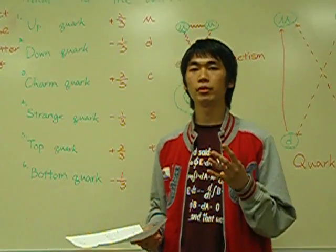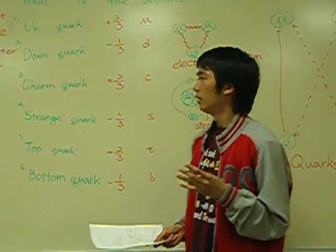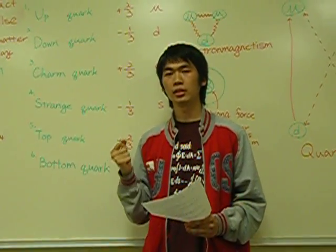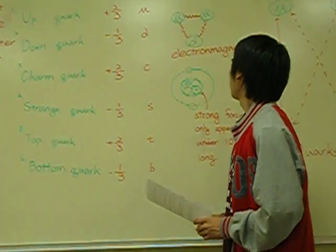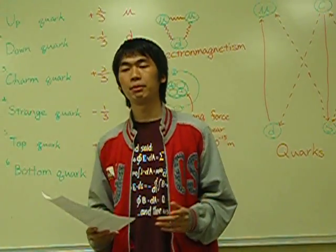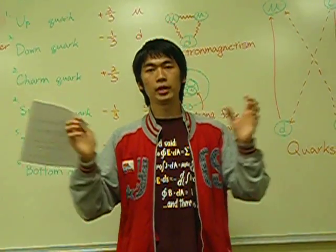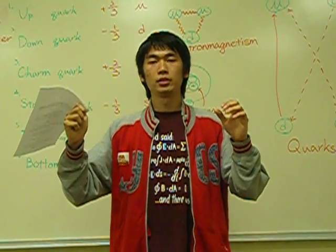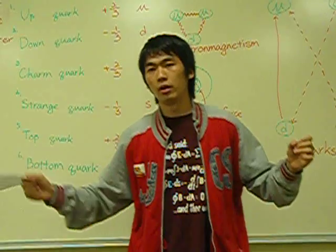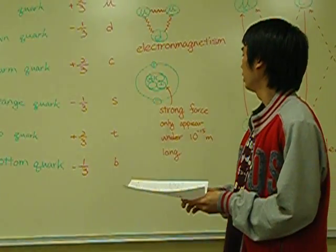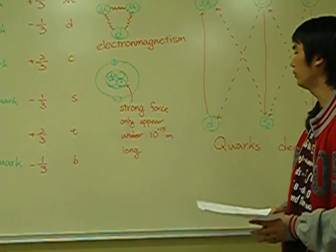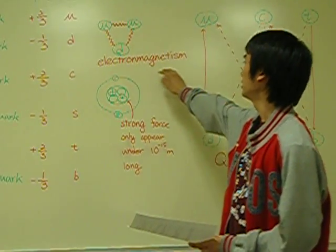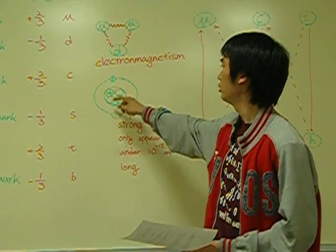Basically, there are four main forces in our lives, and the last one is called the strong force. The strong force is the strongest of them all. Have you ever wondered how protons and neutrons come together to make atoms? The proton and proton are both positive, so they should repel each other. However, because of the strong force, they are held together. The strong force only appears under 10 to the negative 15 meters. Because the strong force is much stronger than electromagnetism, that's why protons and neutrons can form atoms.